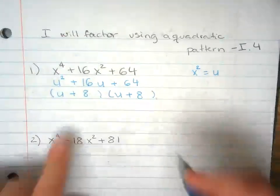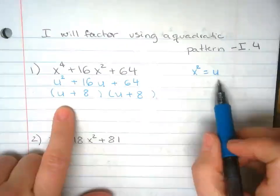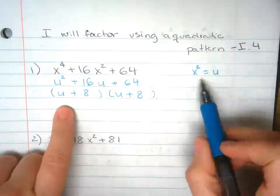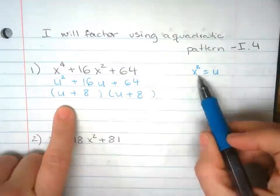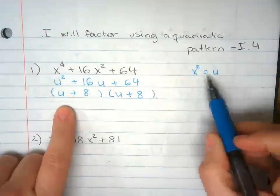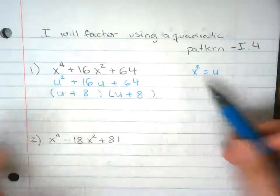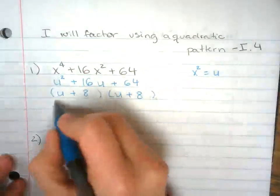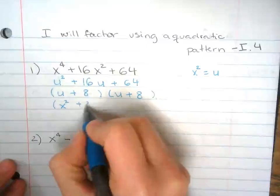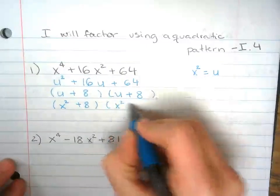Now we need to go back and undo what we just did. So I'm going to substitute u back to x squared how it should be. So x squared plus 8, x squared plus 8.